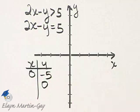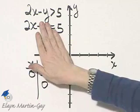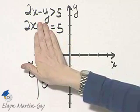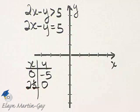Let's find the x-intercept by letting y be 0. If y is 0, we're solving 2x is equal to 5, and divide both sides by 2, and x is 5 over 2, or 2 and 1 half.